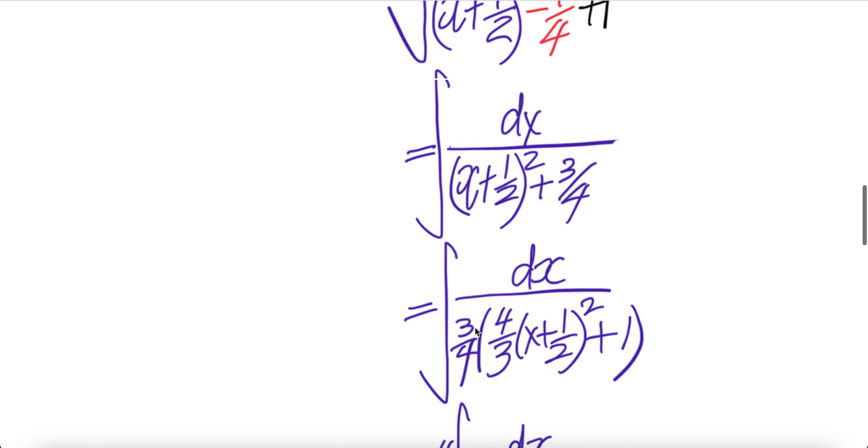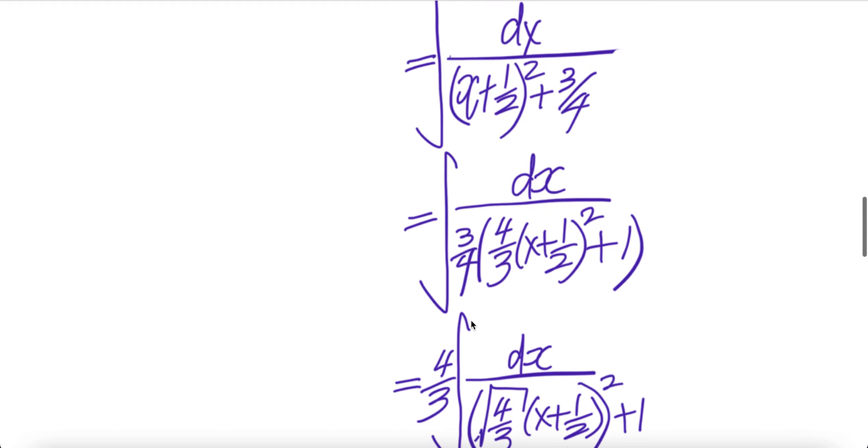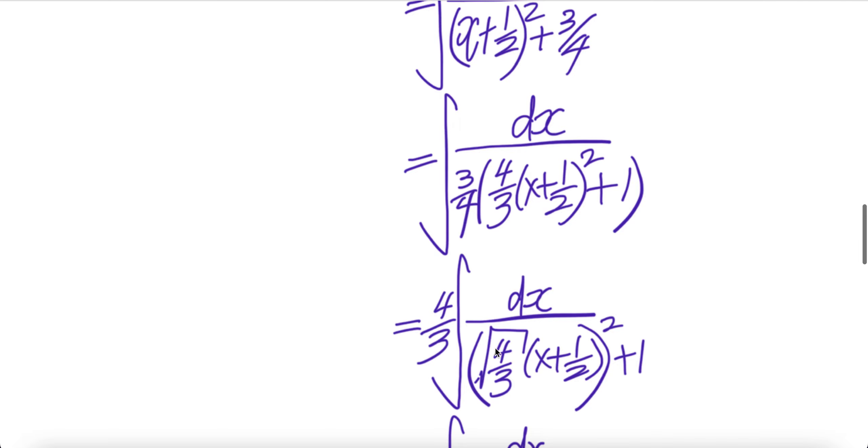Let us factor out the three quarter. And then here you get four over three times this piece plus one. This is a constant, bring out, you get four over three, integral of one over, and push this into the square. You get square root of four over three x plus half, all squared, plus one.